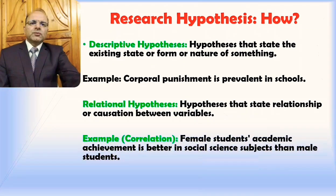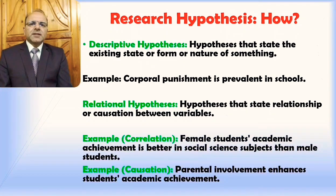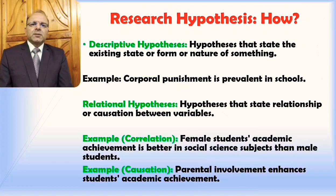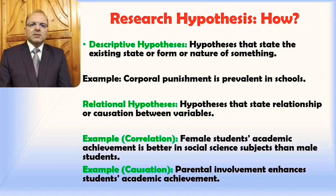The how question also revolves around the different types of hypotheses. Different types have been identified, and these include descriptive hypotheses — hypotheses that state the existing state, form, or nature of something. For example: corporal punishment is prevalent in schools. This shows the state of this particular phenomenon, corporal punishment — whether it is or it is not.